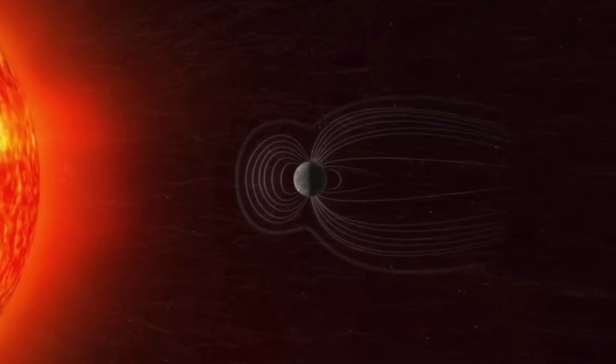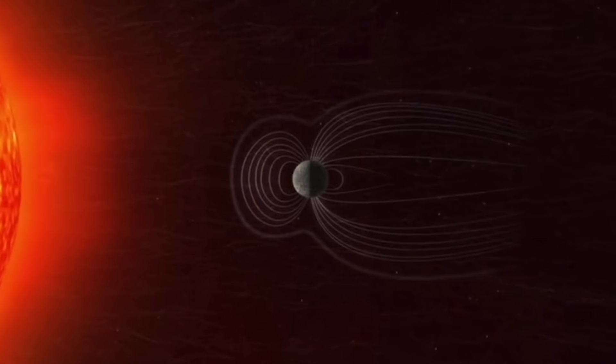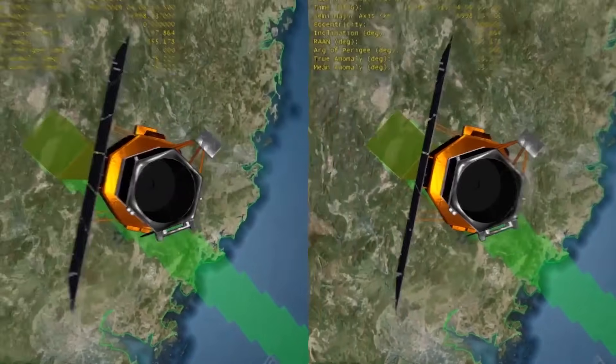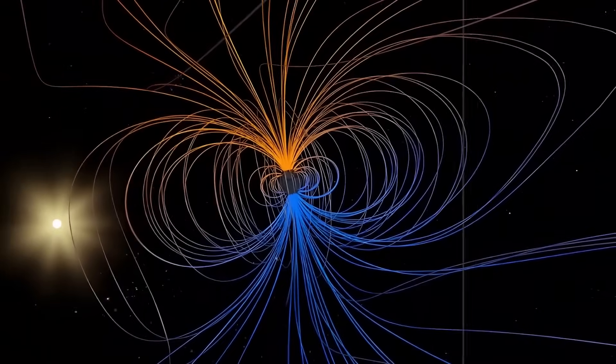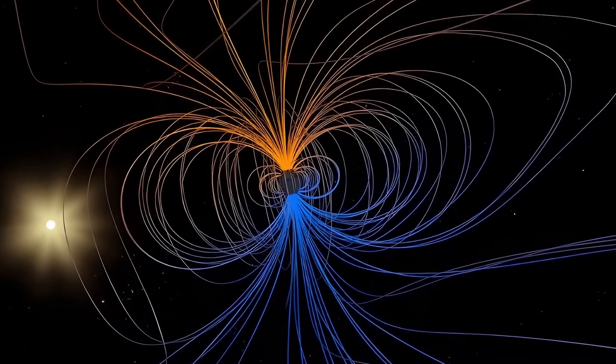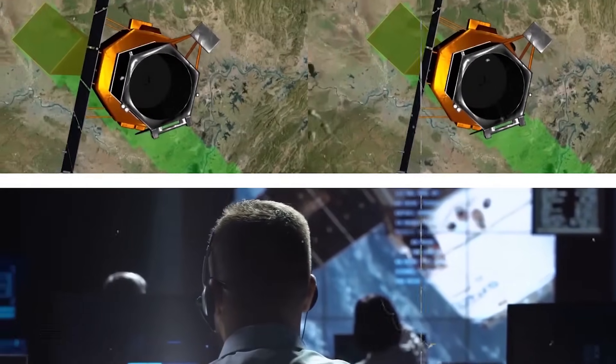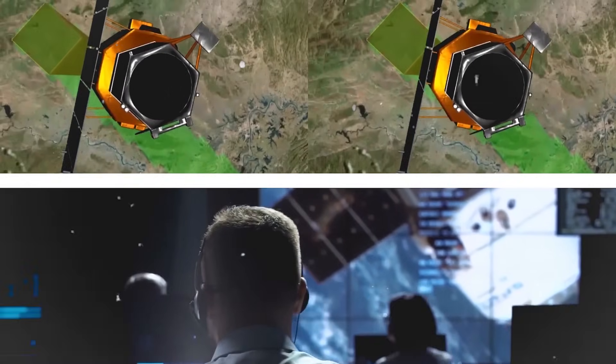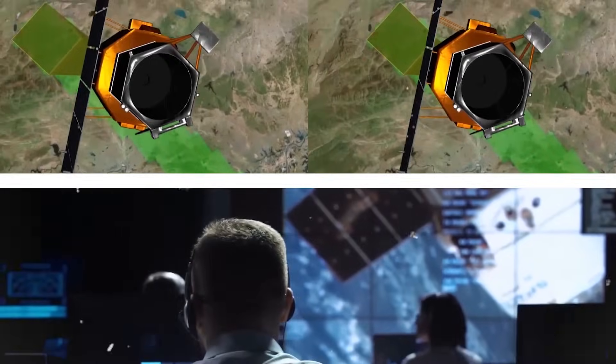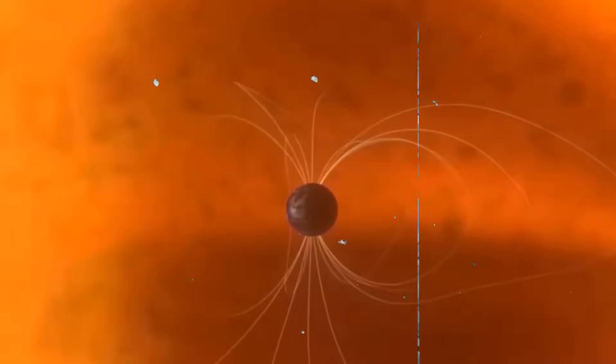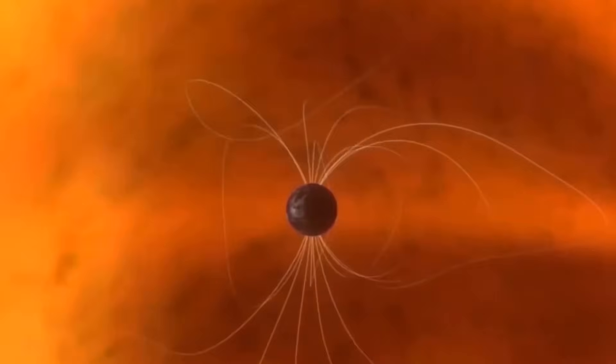When molten rock from volcanic activity solidifies, the magnetic minerals within align according to the Earth's magnetic field at that time. Similarly, as new oceanic crust forms at mid-ocean ridges, iron-rich minerals in the cooling lava record the Earth's magnetic orientation. Over time, these accumulated records present a chronology of the Earth's magnetic field's orientations, revealing the history of past geomagnetic reversals.